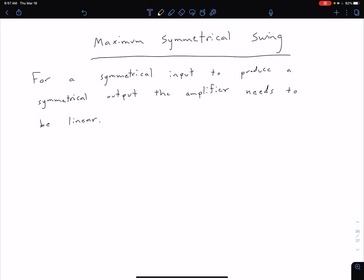Related to the idea of our AC load lines, we have this concept of maximum symmetrical swing. What our maximum symmetrical swing is telling us is basically how much we can vary in our output collector current before we get into a nonlinear region.